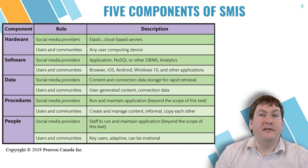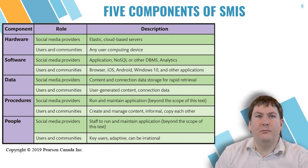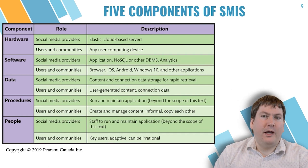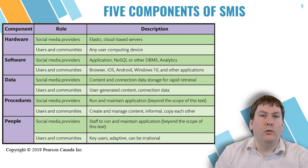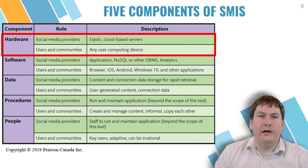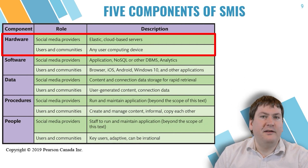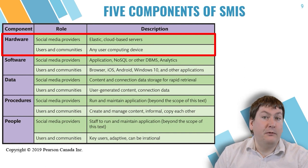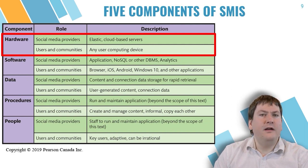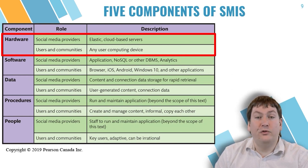SMIS are comprised of the same components as any other information system: hardware, software, data, procedures, and people. However, what these components are can change depending on the role of the actor involved. For social media providers, hardware would be the physical network and computing infrastructure — commonly cloud-based and elastic. For users and communities, the hardware would simply be the desktop computers and mobile devices used to connect to, view, and post on social media sites.